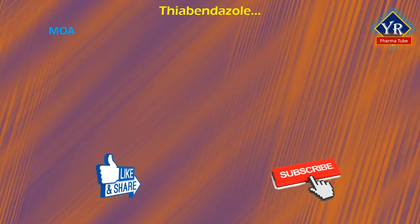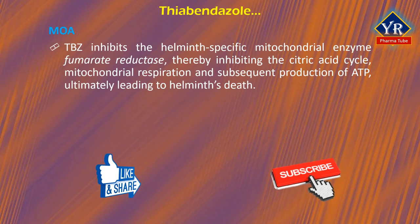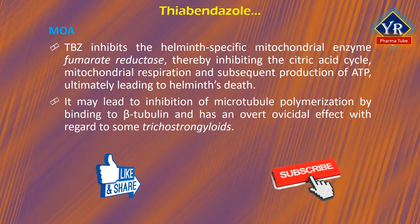Although the mechanism of action has not been fully elucidated, thiobendazole inhibits the helminth-specific mitochondrial enzyme fumarate reductase, thereby inhibiting the citric acid cycle, mitochondrial respiration, and subsequent production of ATP, ultimately leading to the helminth's death. In addition, it has been suggested that thiobendazole may inhibit microtubule polymerization by binding to beta-tubulin, and has an ovicidal effect with regard to some trichostrongyloids.